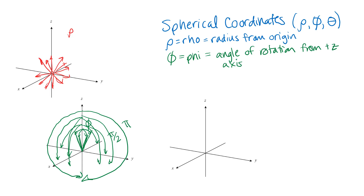Just like in cylindrical coordinates, we don't need negative radii and we don't need all possible angle values. You only need rho values greater than or equal to zero, and phi only needs to go from zero to pi radians — from the positive Z axis all the way down to the negative Z axis.